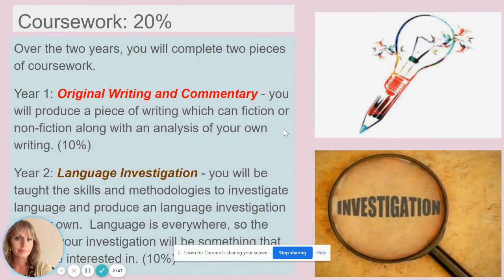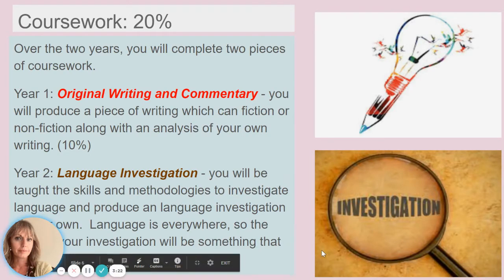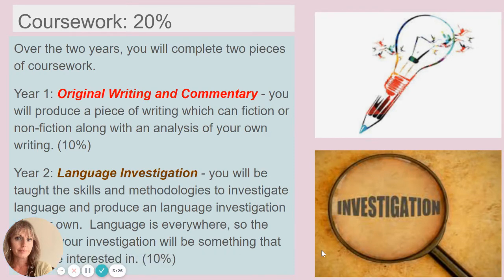In terms of coursework there are two pieces. One is original writing — it doesn't have to be fiction, you get quite a wide remit of what you'd like to write about — and then you write a piece of analysis on how a style model has informed your writing. The second piece is a language investigation. You'll be taught how to investigate language, and because language is everywhere, the topic can be something easily relatable to you — if you're interested in football or courses, there's a language investigation in there somewhere.